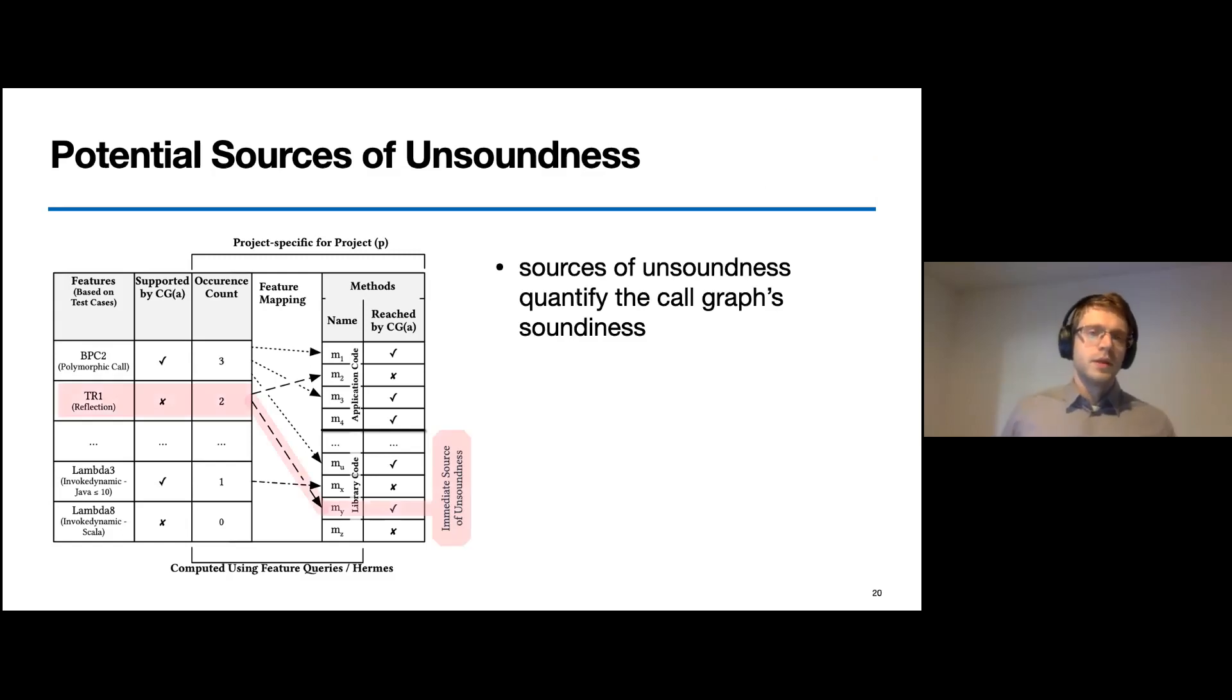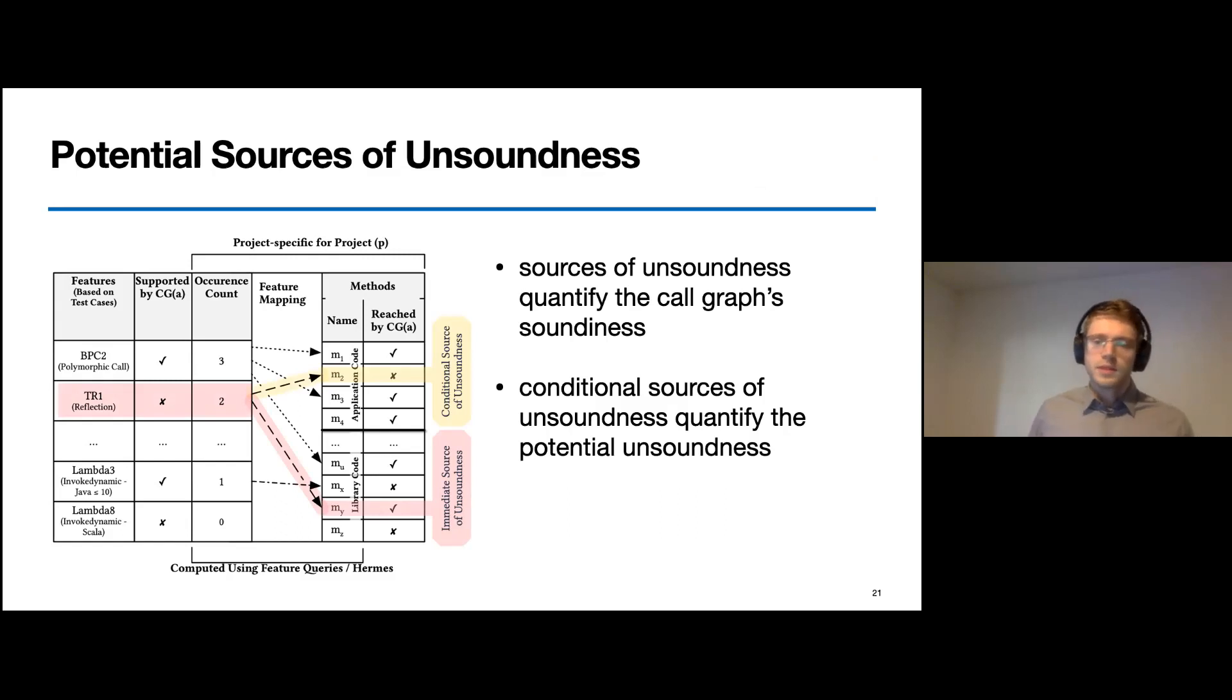Whenever an unsupported feature that is present in the program, here the feature represented by TR1, and it is also reachable within the call graph, we know that the call graph is definitely unsound at this location and at this call site. When we do this for all feature occurrences, we can quantify the soundiness of the call graph. But in this case, where a feature occurs in a method that is not reached by the call graph, we have a conditional source of unsoundness. Here, we just can't decide whether the call graph does not reach this method due to its unsoundness, or if the program's execution with the given entry points does not reach the method.